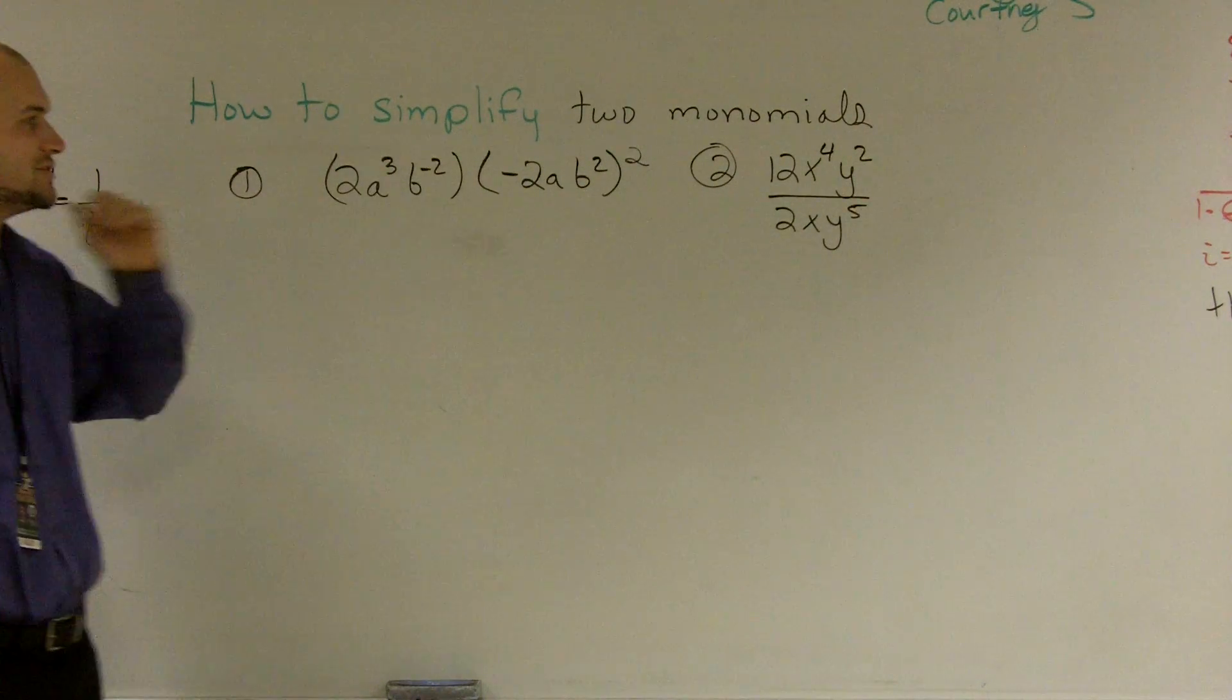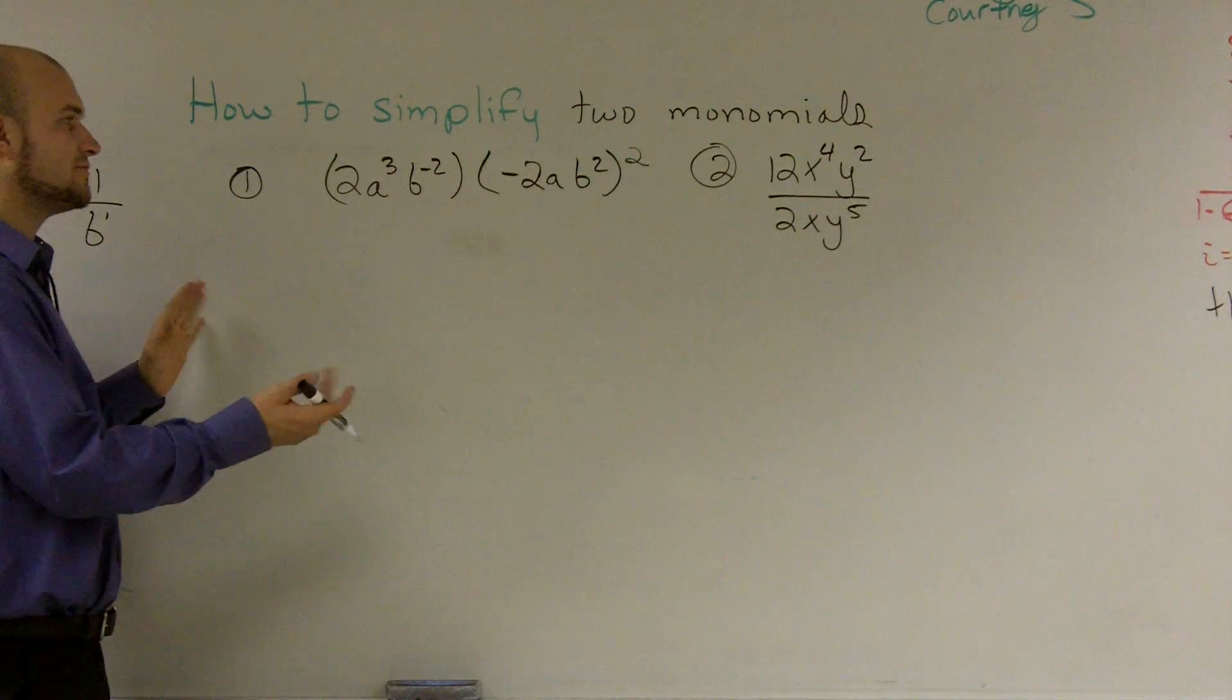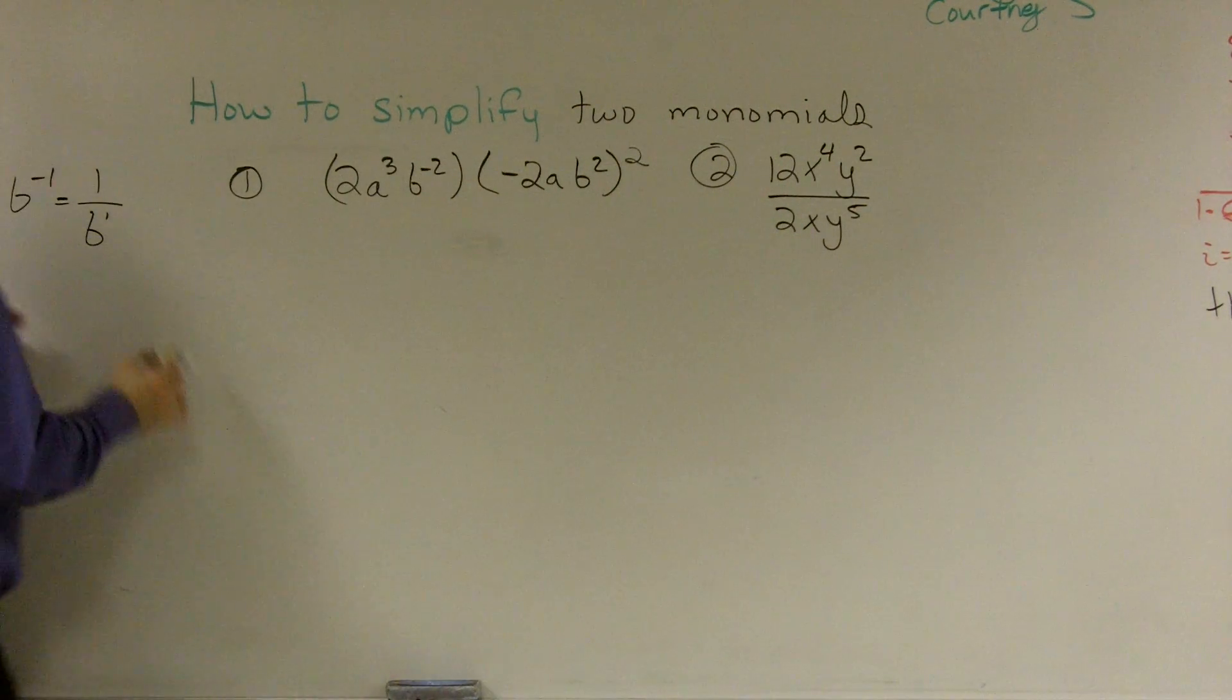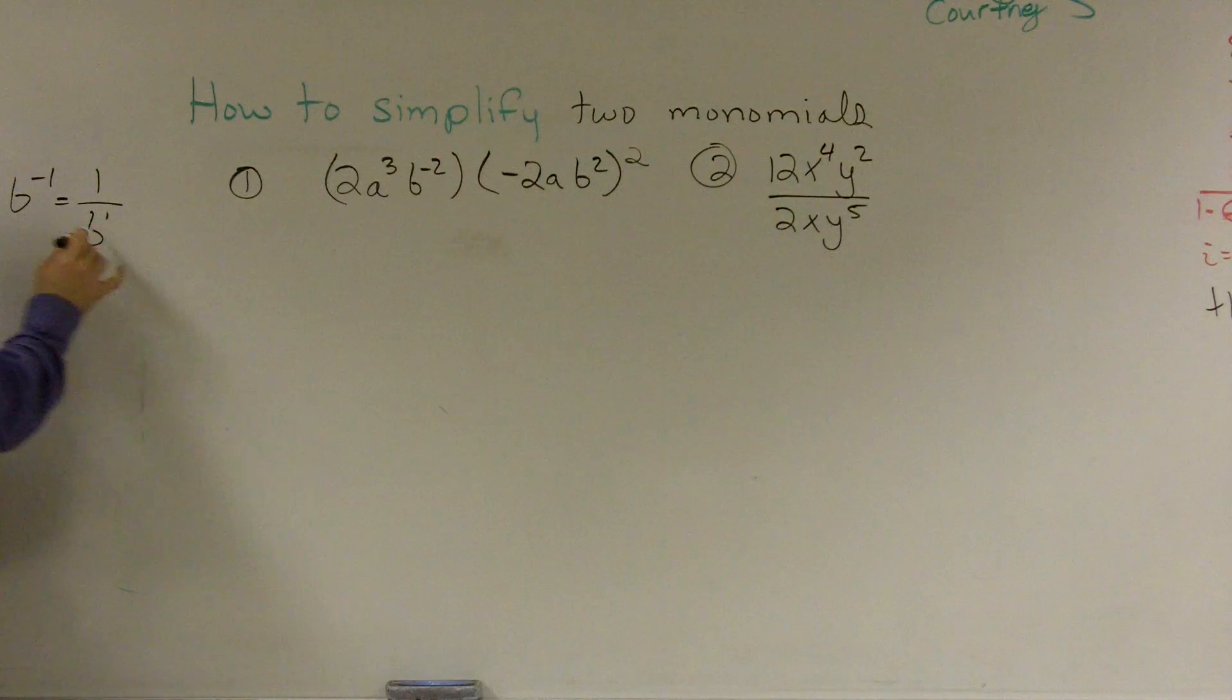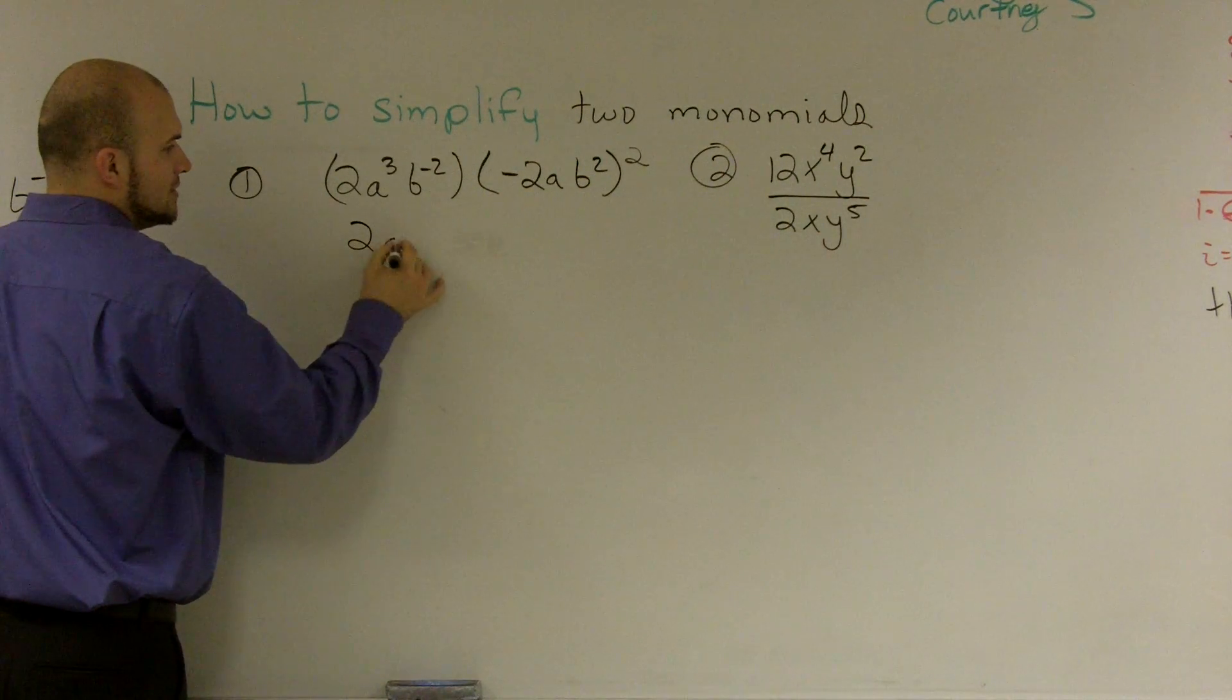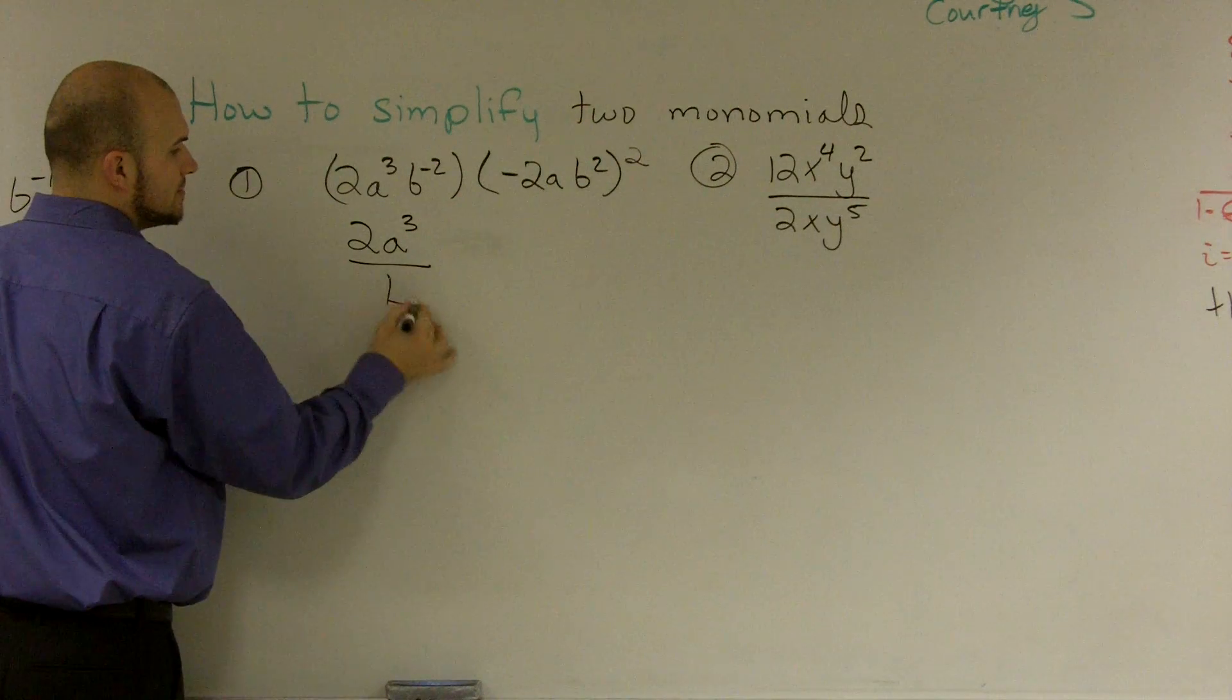The main important thing is you have to make sure you simplify each monomial individually first. And if I notice by using my law of exponents, whenever I have a negative exponent, I know that's going to be over 1. So essentially, I can put this on the bottom of a fraction. So therefore, I'll have 2a cubed over b squared.